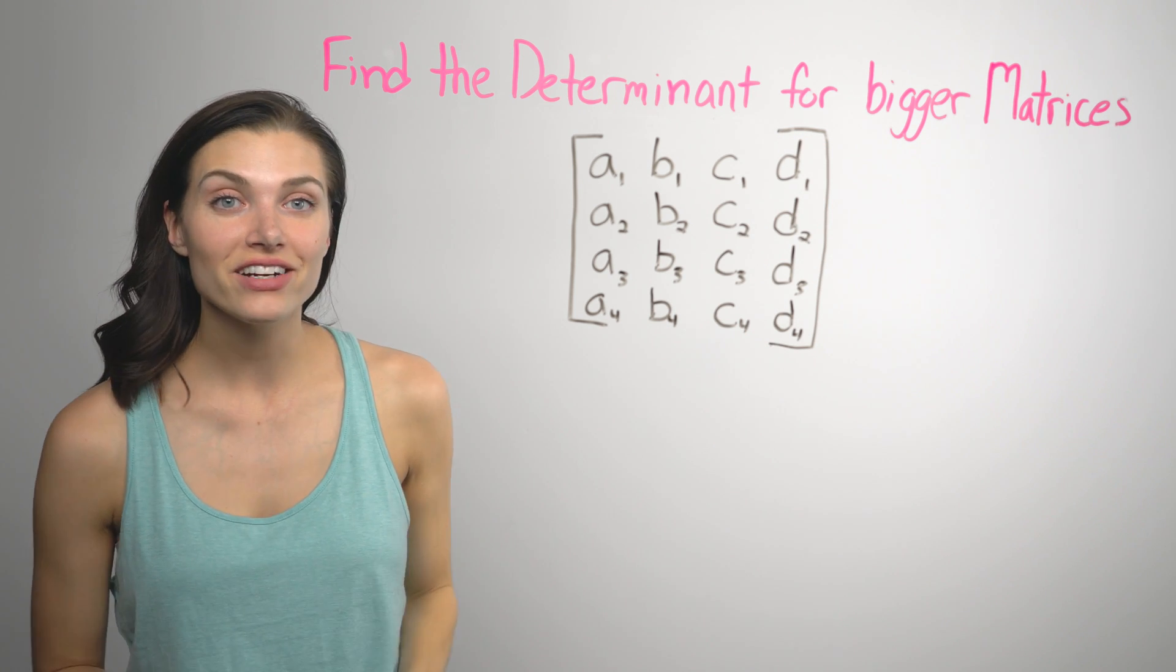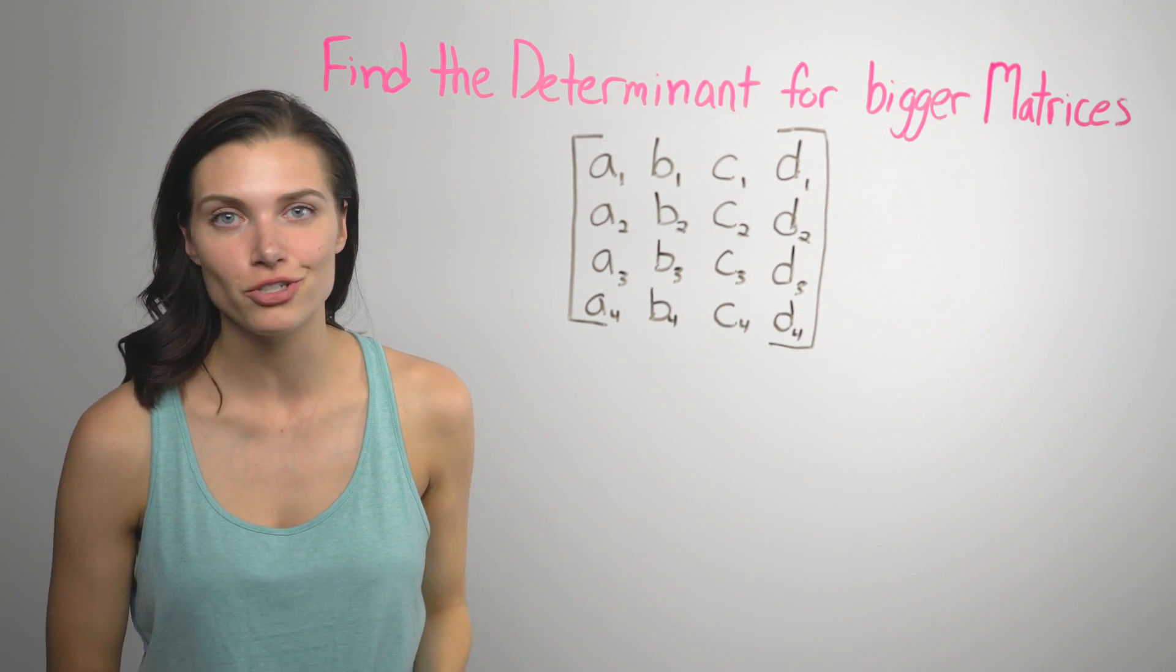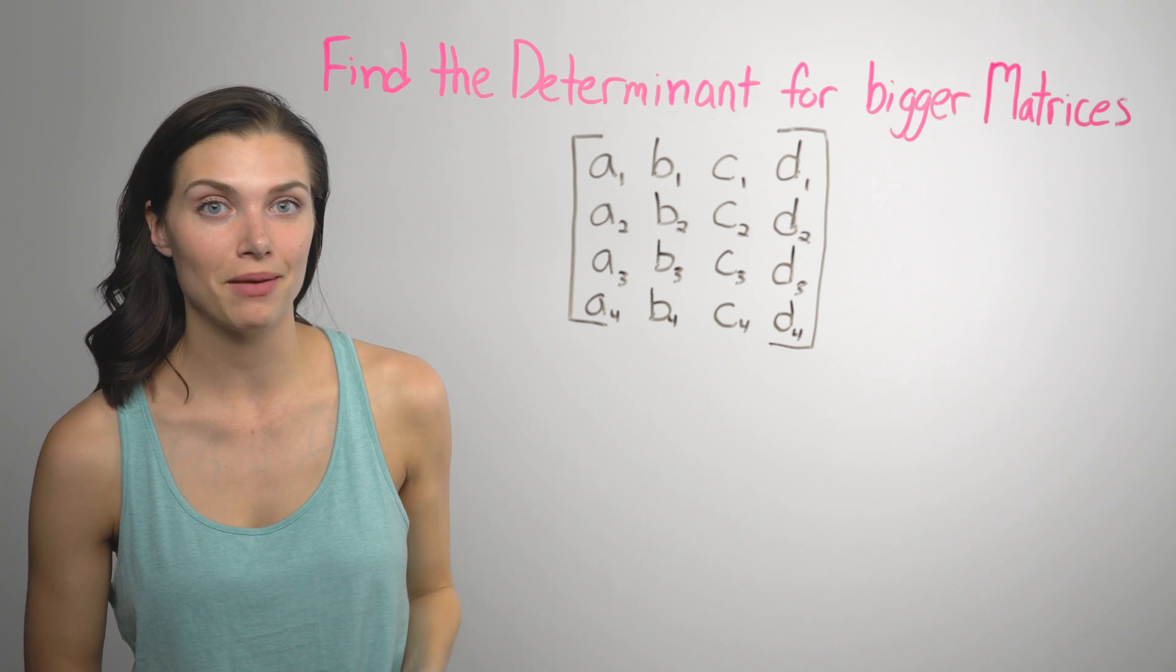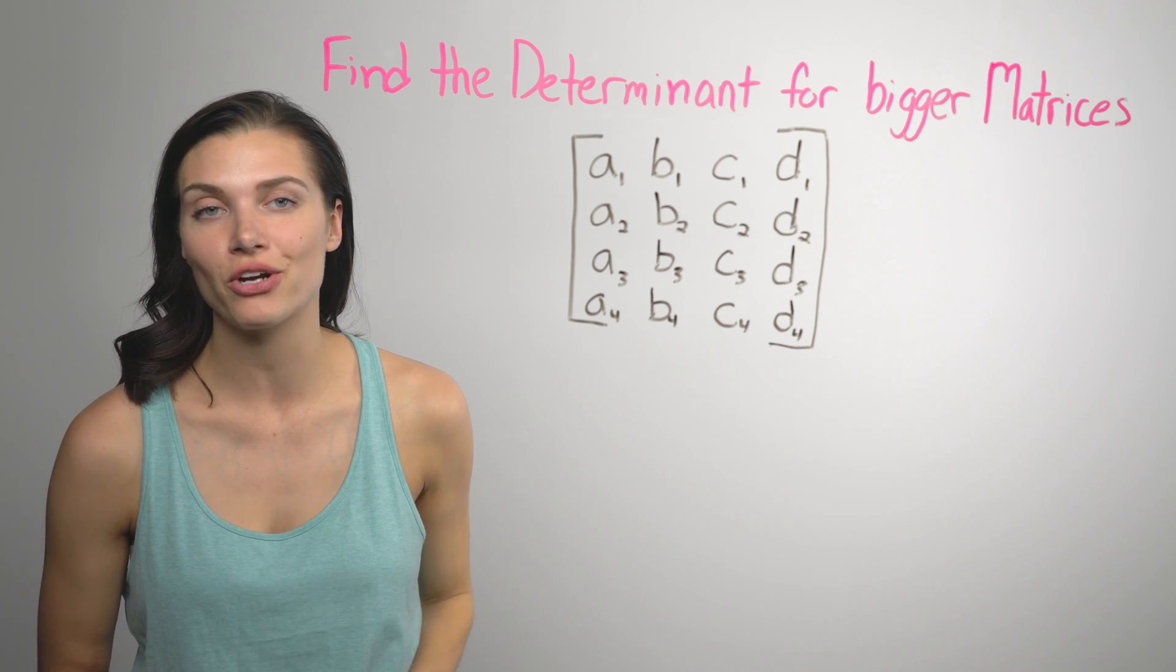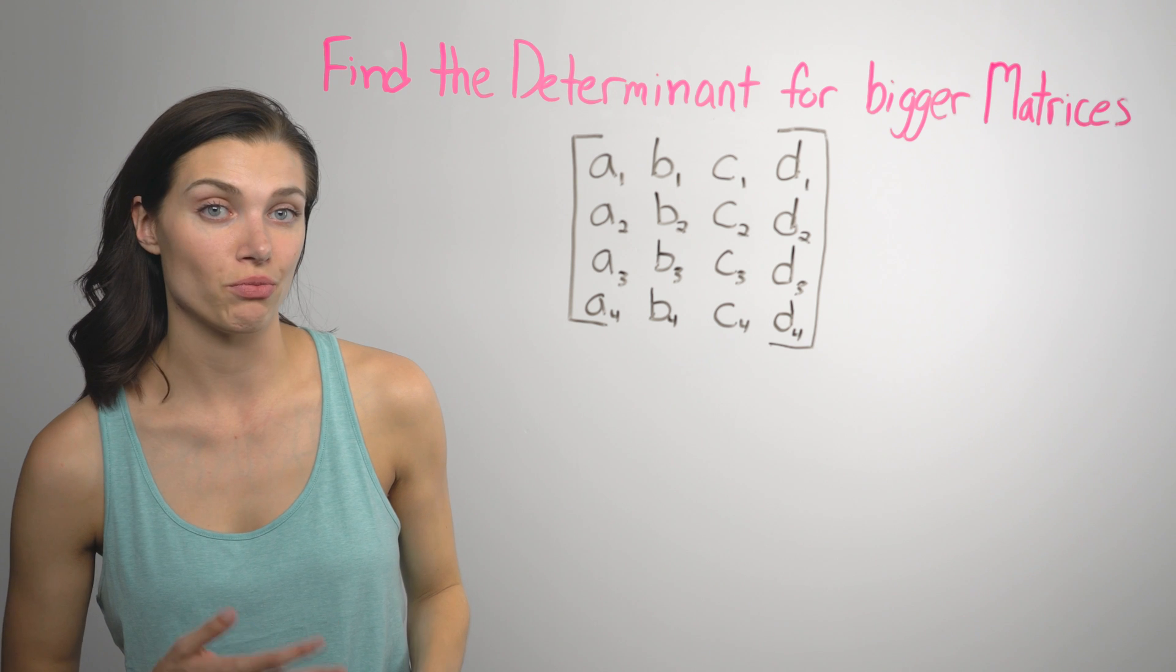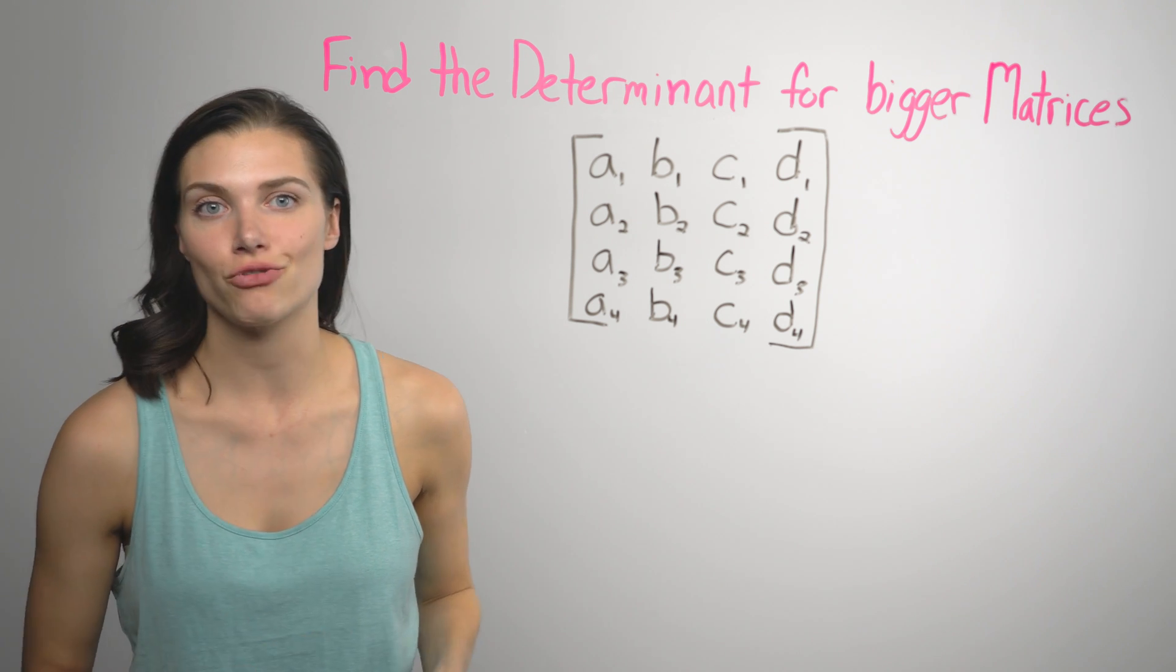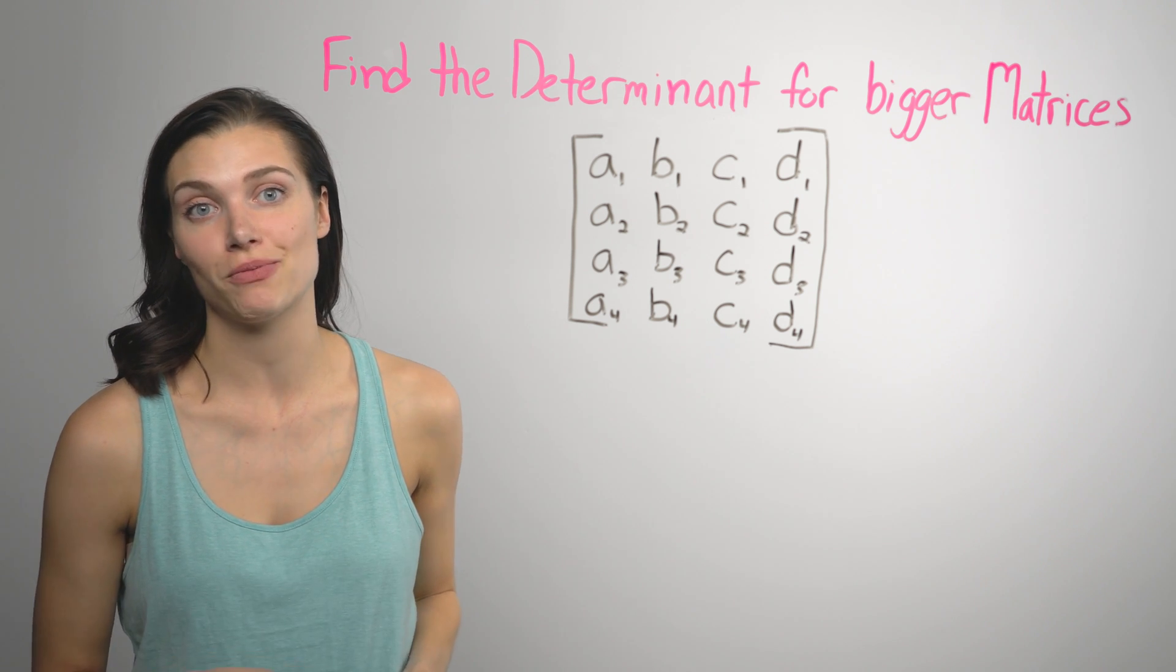The trick here is that you can't immediately break up the matrix into 2x2 matrices. You can only break it up into matrices that are one smaller in each dimension. So you break a 4x4 matrix into 3x3 matrices and find the determinant for those.